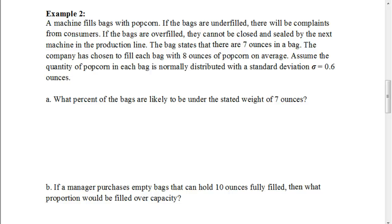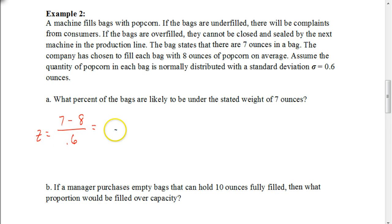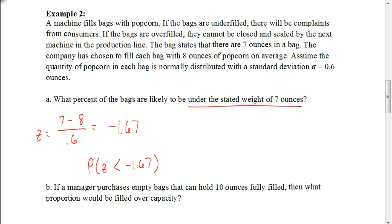To figure that out, we first have to figure out what our z-score is. We want to figure out how many standard deviations — in this case below the mean — our 7 ounces is. We're going to take 7 minus our average, which is 8 ounces, divided by our standard deviation, which is 0.6. When we do that, we get negative 1.67. So we're trying to find the probability that z is going to be less than negative 1.67, because 7 ounces is 1.67 standard deviations below the mean.